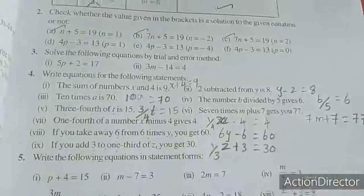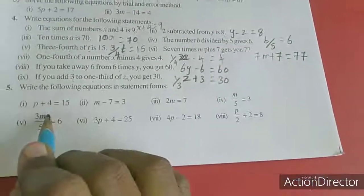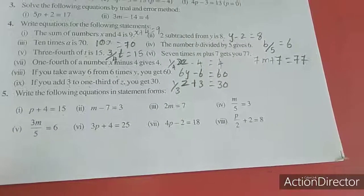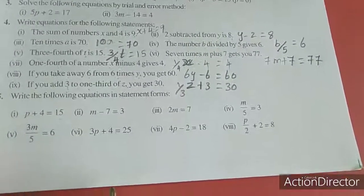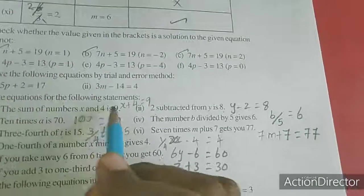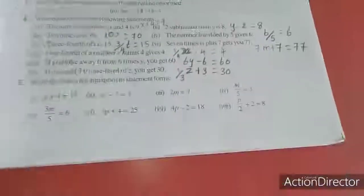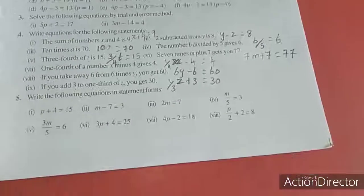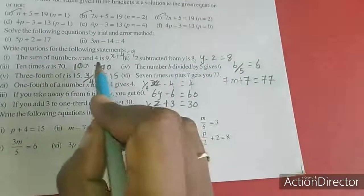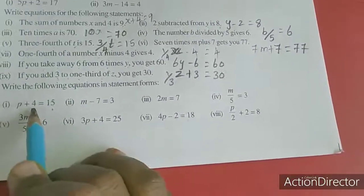Now we will move to the fifth sum. Write the following equations in statement form. They gave the equation; we are going to write it as a sentence. I will just tell the answers — copy in your note, don't write in books. For p plus 4 equal to 15: the sum of p and 4 is 15.